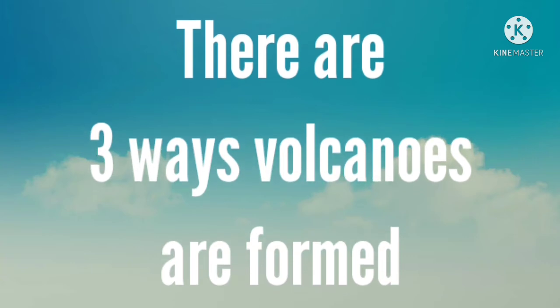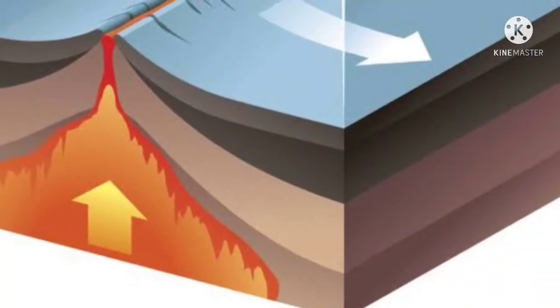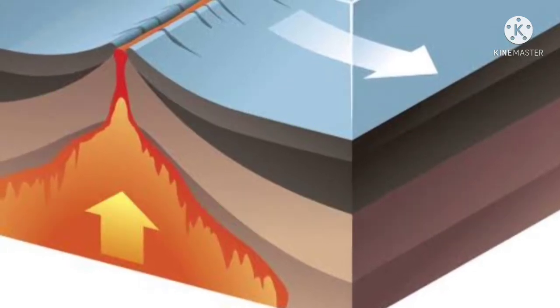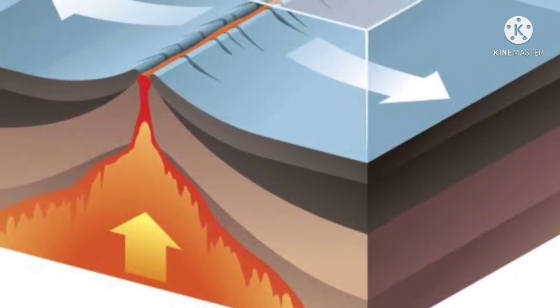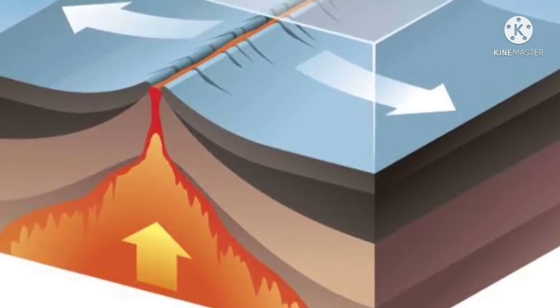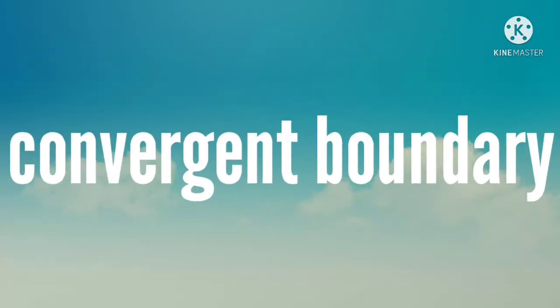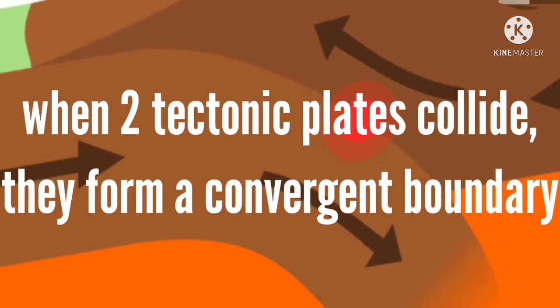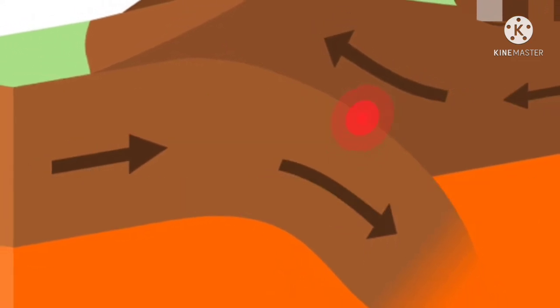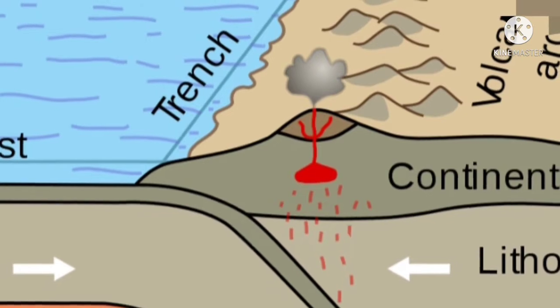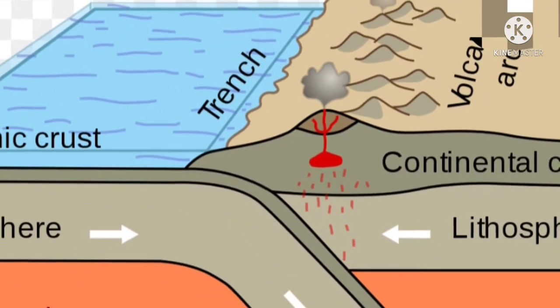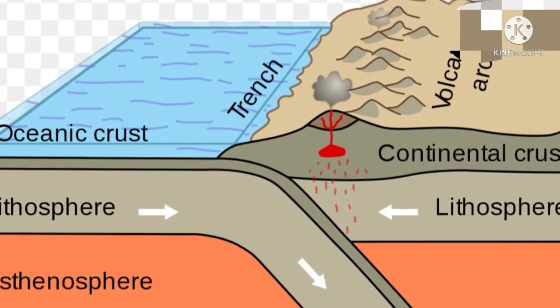There are three ways volcanoes are formed. First, at a divergent boundary, tectonic plates move apart from one another. Magma continuously moves up from the mantle into this boundary, building new plate material on both sides. Second, convergent boundaries: if two tectonic plates collide, they form a convergent plate boundary. Usually one plate will move beneath the other — a process known as subduction. The new magma rises and may erupt violently to form volcanoes, often building arcs of islands along the convergent boundary.